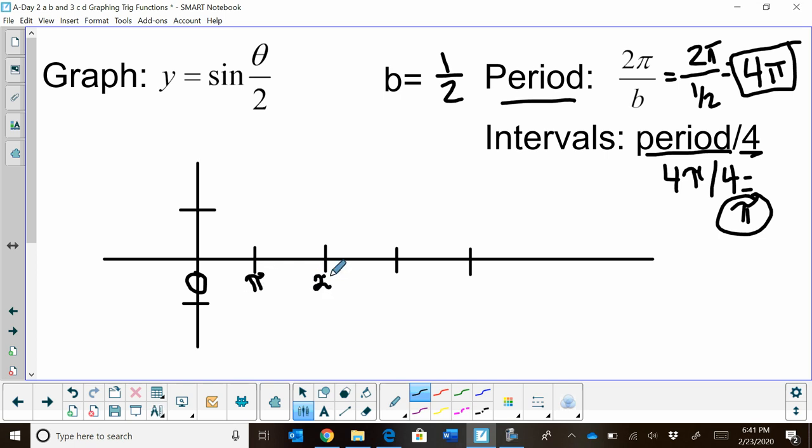So that's 1 pi, that's 2 pi, this one's 3 pi, and this one's 4 pi. And then that way I can get one full cycle in.